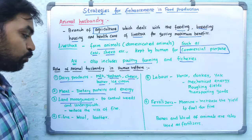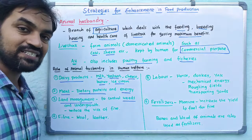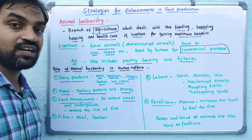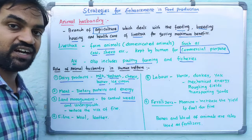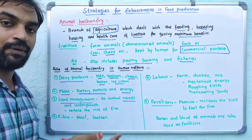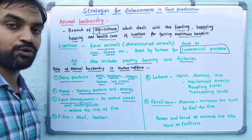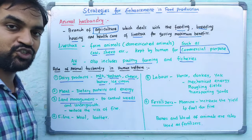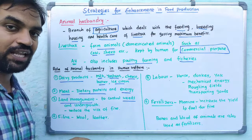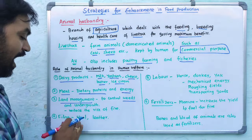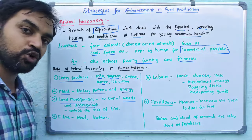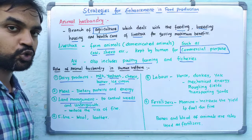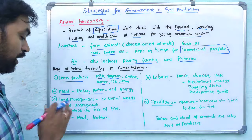Next is land management — to control the weeds. If you don't want to control the weeds in agricultural land, we can use animals to graze on the weeds and destroy them. In this way, animals help control the weeds.